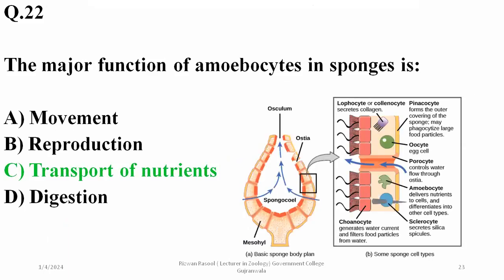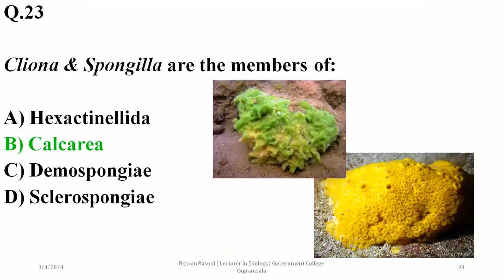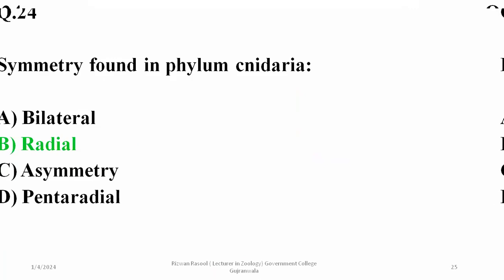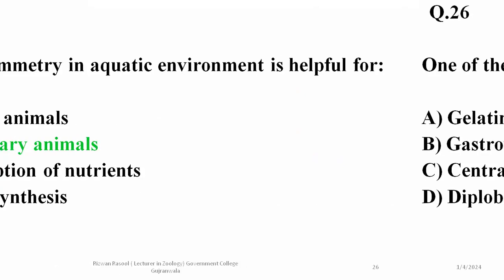Question 22: the major function of amoebocytes in sponges is transport of nutrients — they absorb and carry nutrients to other body cells, so C is the right answer. Cnidarians and sponges are members of Coelenterata. The symmetry found in phylum Cnidaria is radial symmetry. Radial symmetry in an aquatic environment is helpful for sedentary non-motile animals because receptors are distributed on all sides, allowing detection of threats or food from any direction.